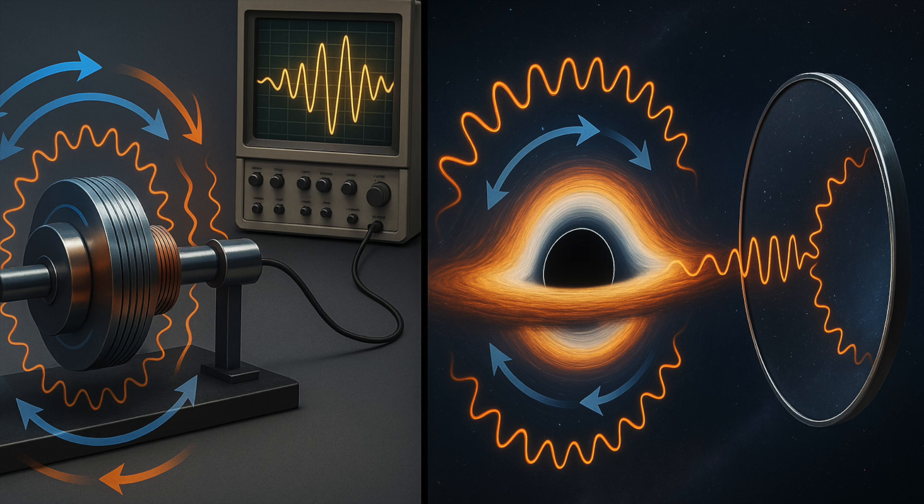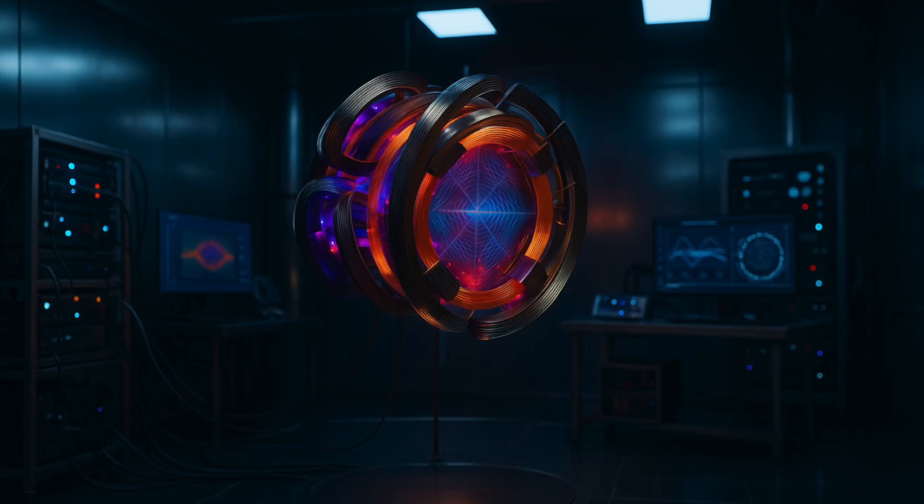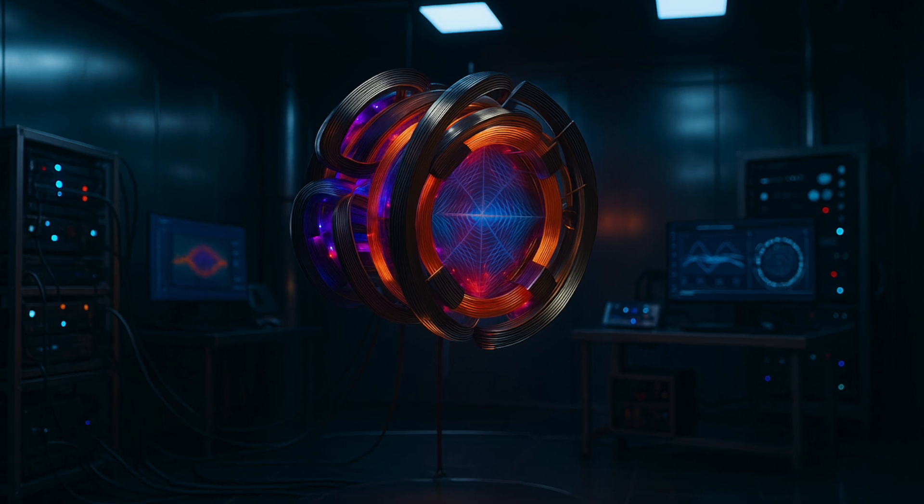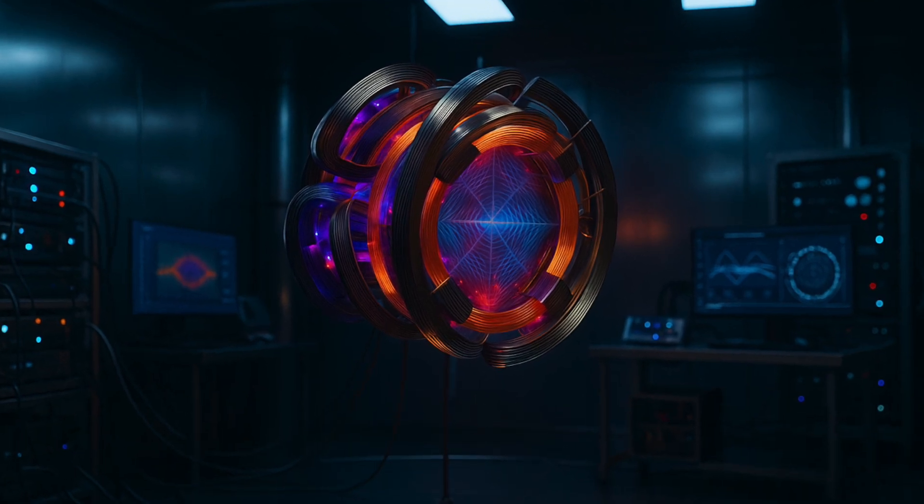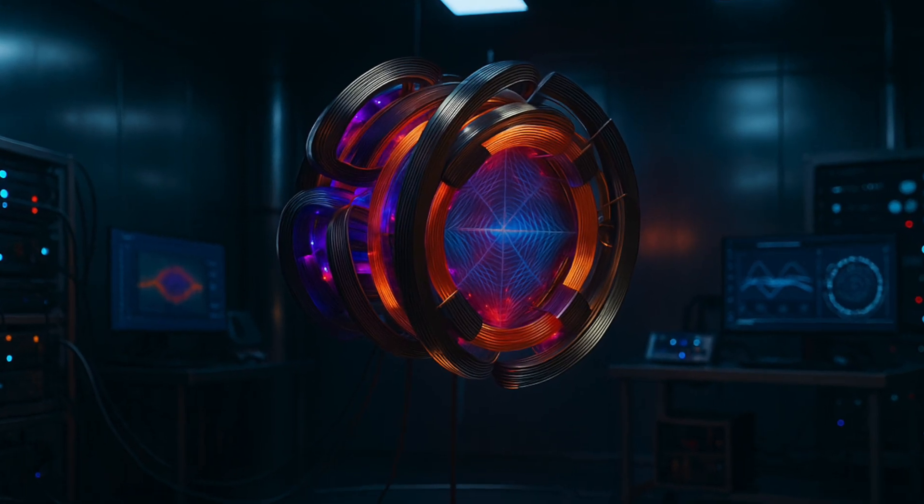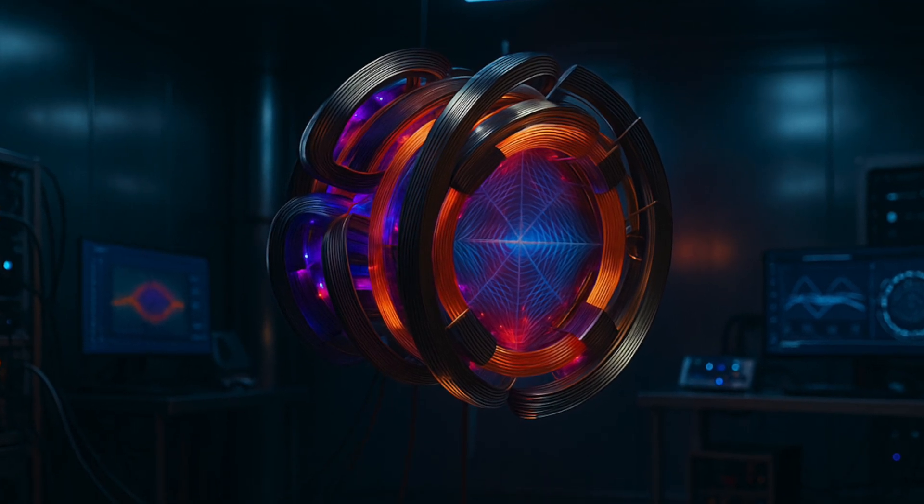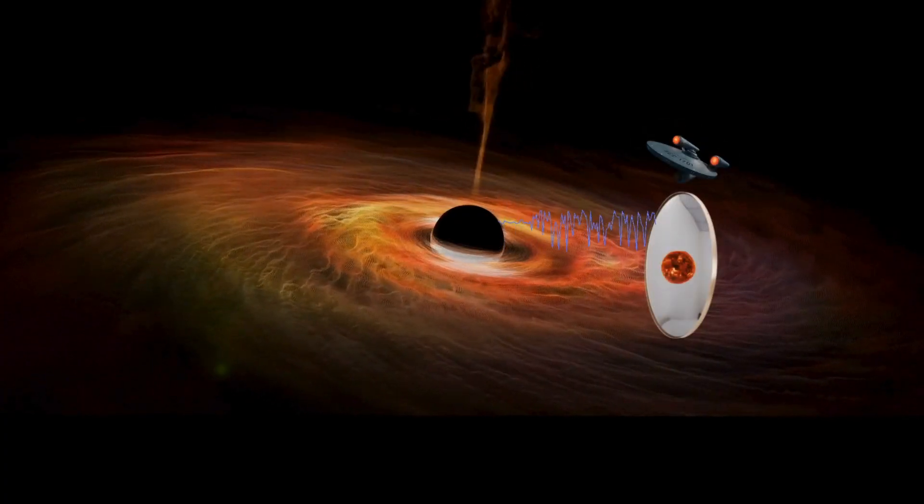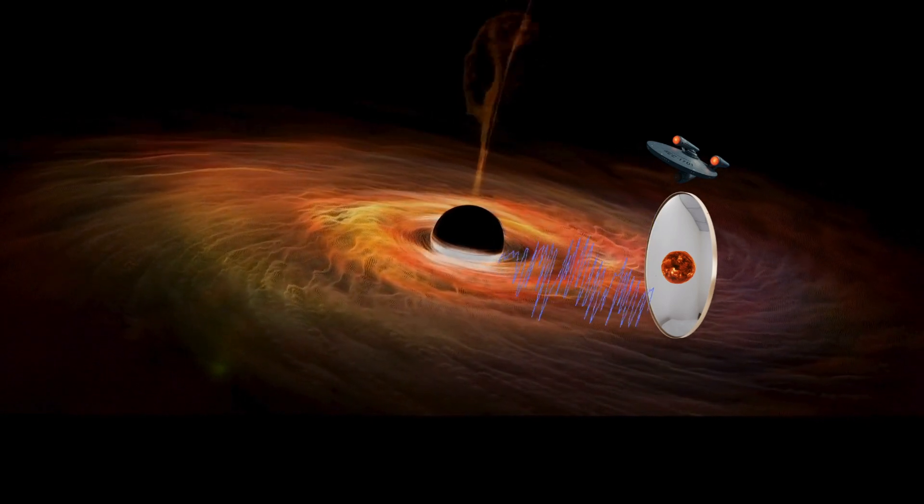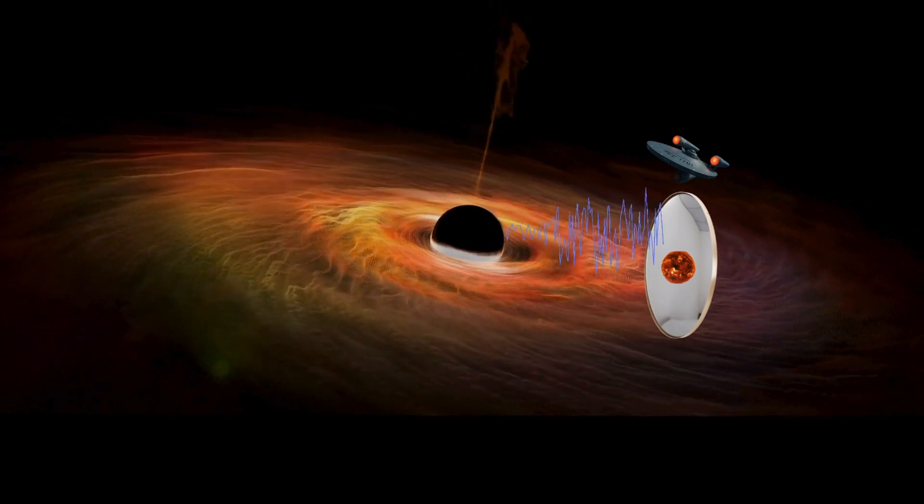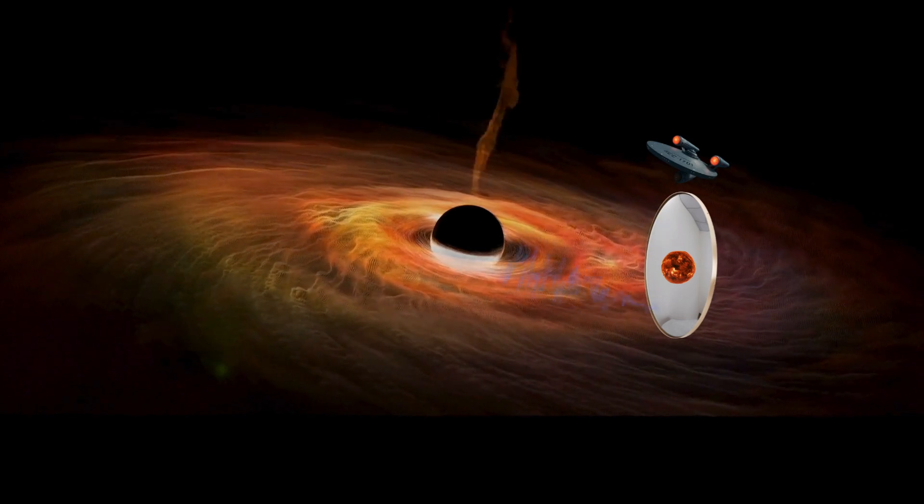And here's the kicker. Superradiance doesn't just happen around black holes. Theoretically, it can occur around any rotating object. That was exactly the idea proposed by Zeldovich in the early 1970s using a spinning metallic cylinder. And that's the very concept that inspired the design behind the recent experiment. Now, the third stage. The amplified wave hits the reflective mirror and is redirected back toward the black hole. And once again, superradiance happens.